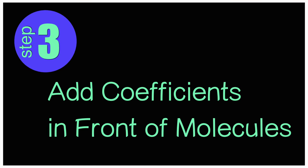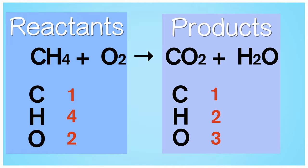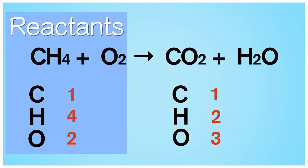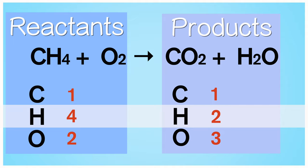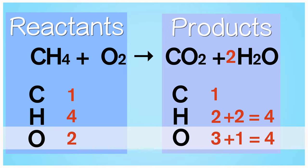Step 3: Add coefficients in front of the molecules. In order to balance the chemical equation, you need to make sure that the number of atoms on the reactant side is equal to the number of atoms on the product side. To make both sides equal, you will need to multiply the number of atoms in each element until both sides are equal. You can do this by placing coefficients in front of the molecules. On the reactant side there are 4 hydrogen atoms. You can add a coefficient of 2 in front of H2O on the product side to make an equal number of hydrogen atoms. Now, in order to make an equal number of oxygen atoms, add a coefficient of 2 in front of O2 on the reactant side.